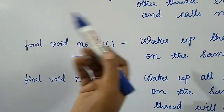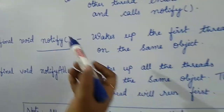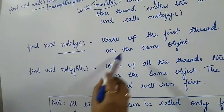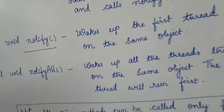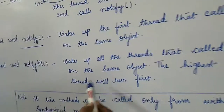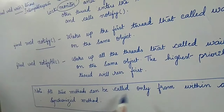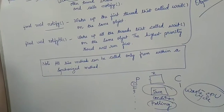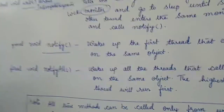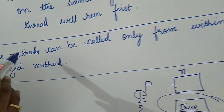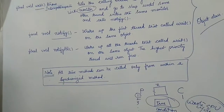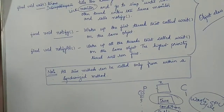Notify wakes up the first thread that called wait on the same object. NotifyAll wakes up all threads that called wait on the same object, and the highest-priority thread runs first. One very important point: all three methods — wait, notify, and notifyAll — can only be called from within a synchronized method.